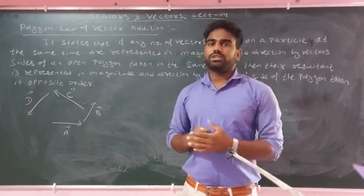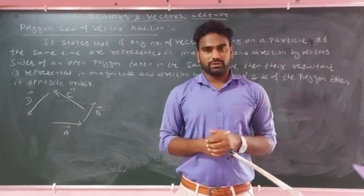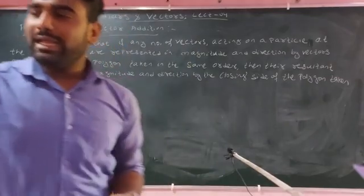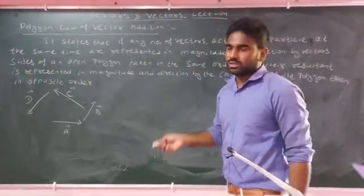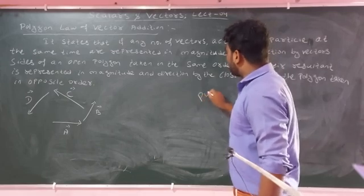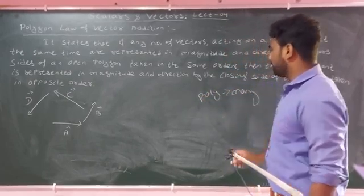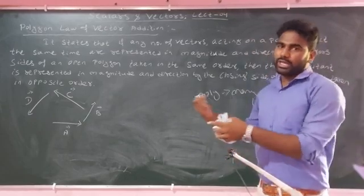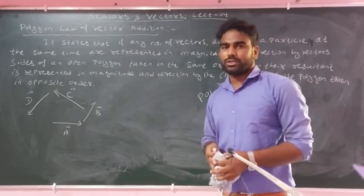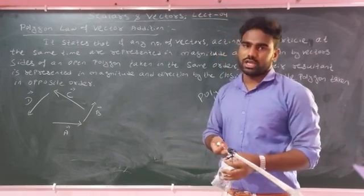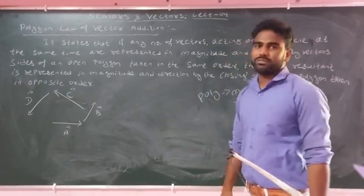Lecture four is where I discuss the Polygon Law of Vector Addition. So, a polygon — this is a polygon. By the way, we have two, three, four, five, six, seven vectors. This is a polygon. 'Poly' means many — many vectors.